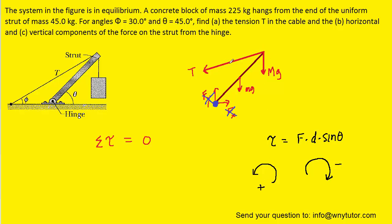Let's look at the force marked T and apply the torque equation. We take the force T, multiply it by the distance to the pivot point — which is simply the length of the strut, l — and then multiply by the sine of an angle. That angle is between the force and the strut, which we'll call alpha. The tension pulls to the left on the strut, causing it to try to rotate counterclockwise, so that torque is positive.